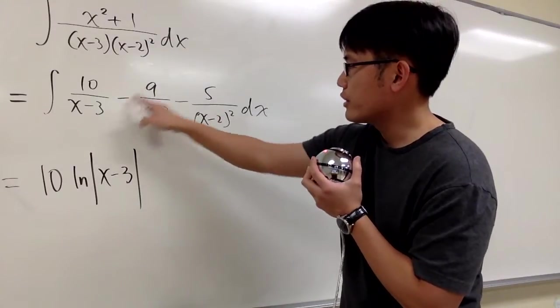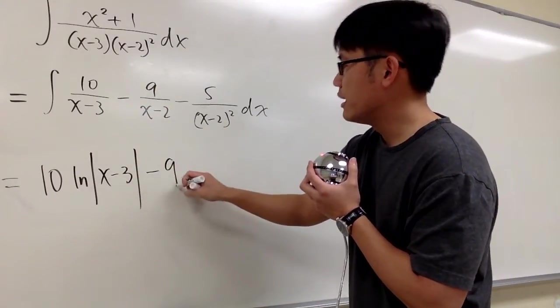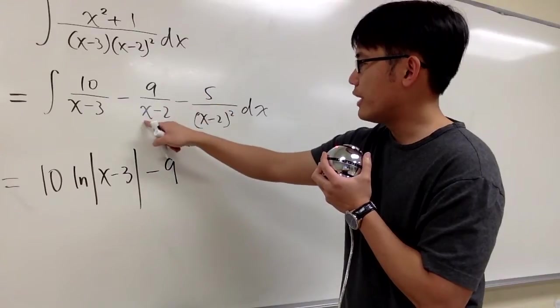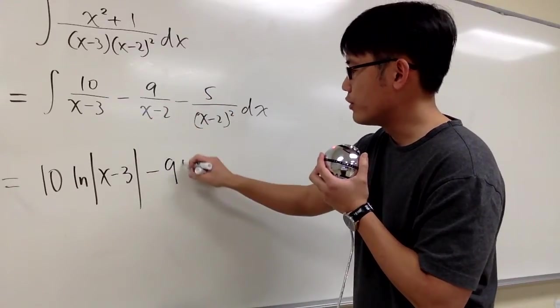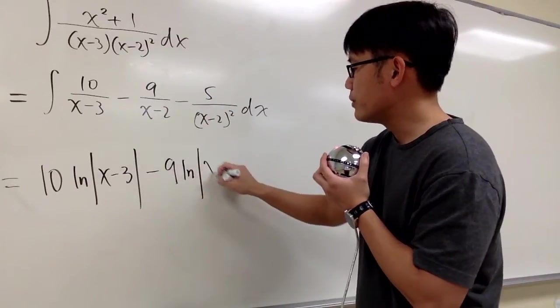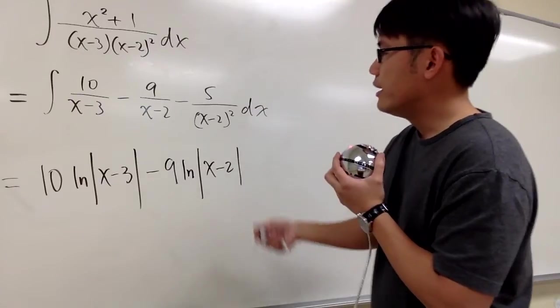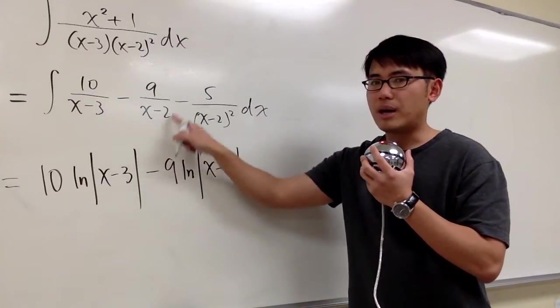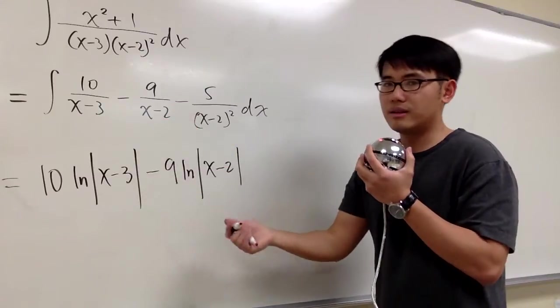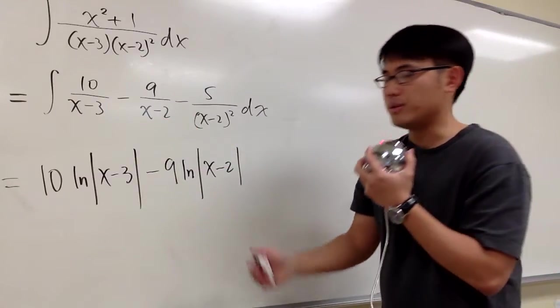And for the second part, let's write down the number first, which is negative 9. And then we have something over x minus 2. So the anti-derivative for that will be ln, absolute value, x minus 2. And once again, the derivative of the bottom, which is just 1, and we don't need to divide. Because dividing by 1 doesn't really matter.